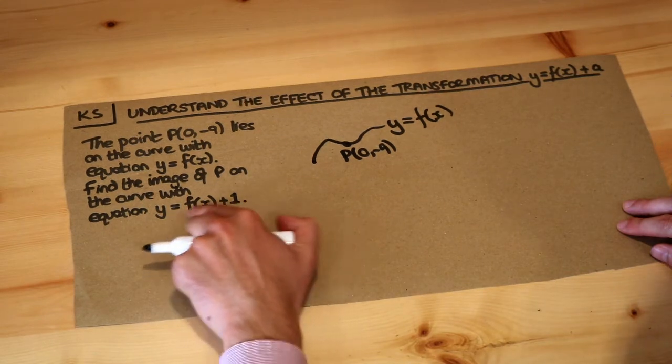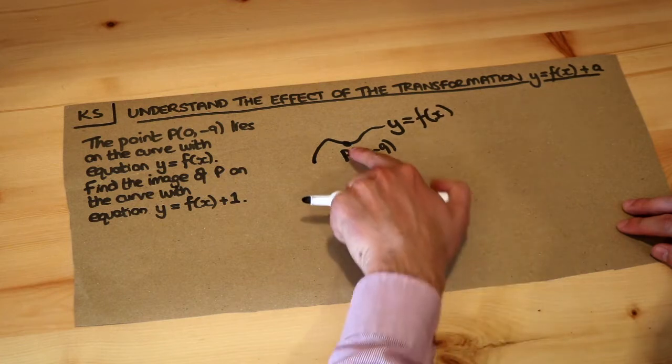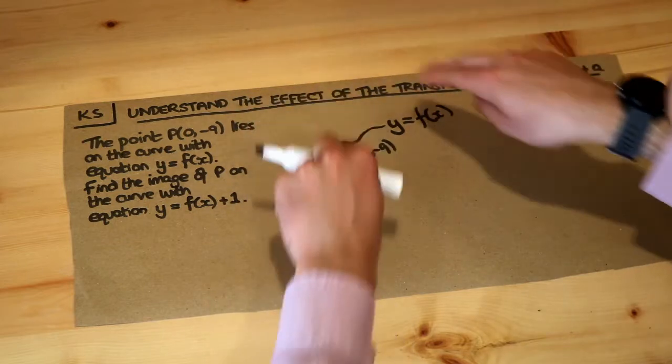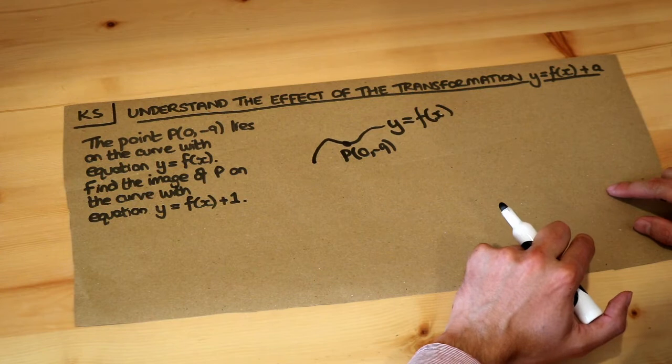And then we're instead sketching y equals f of x plus 1, so we're modifying the function f to get another expression in terms of x. Consequently, as this curve is modified, whether it shifts left or right or up or down or stretched or something like that, that point is going to potentially move to somewhere else.